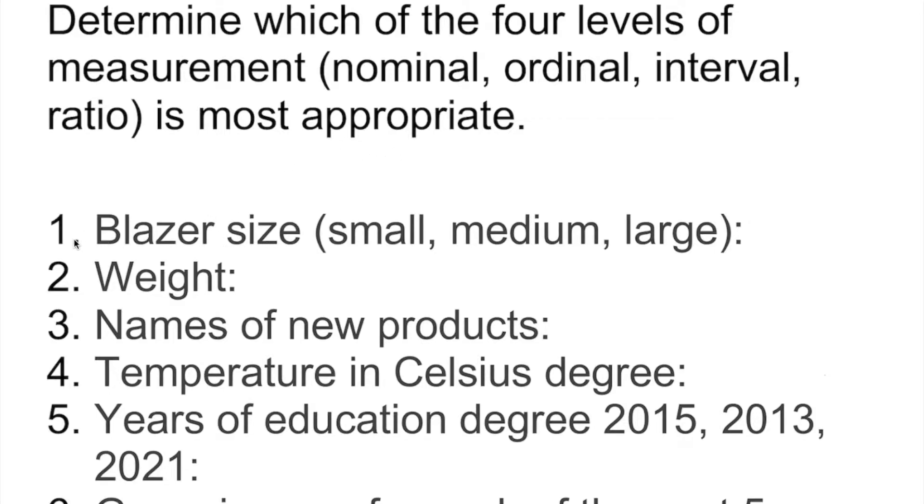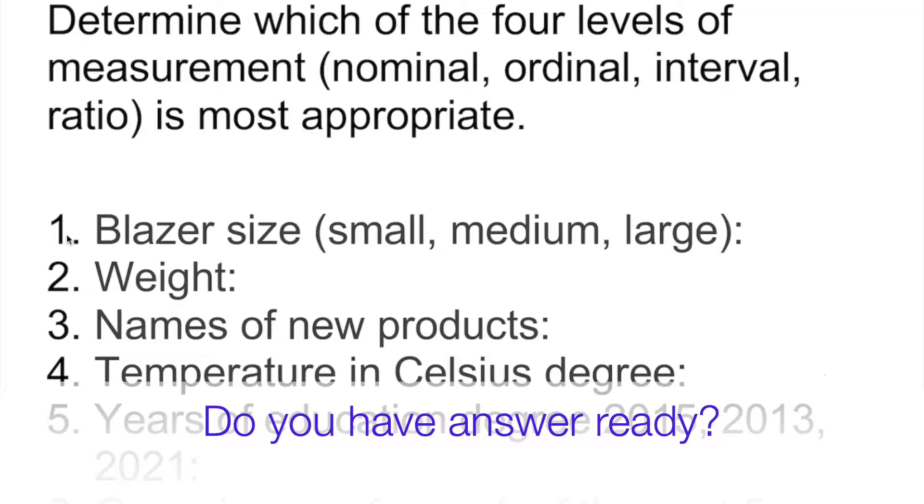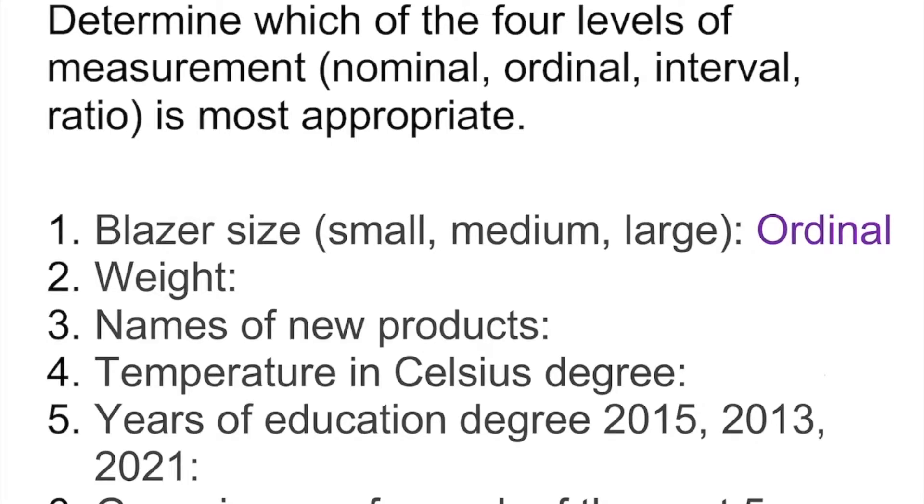So if you look at number one, blazer size - it's small, medium, large. Come up with the answer. Ordinal. Why? Because order matters, actually, as you see: small, medium, large.